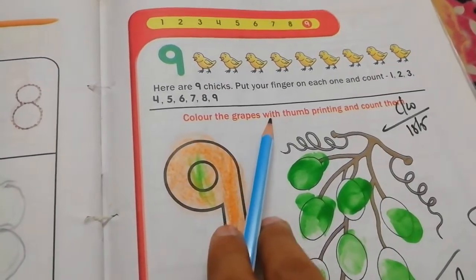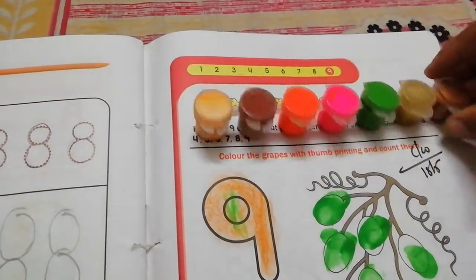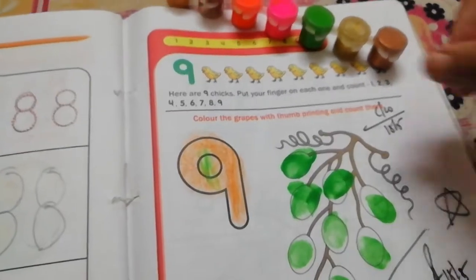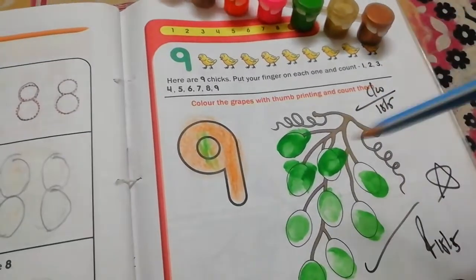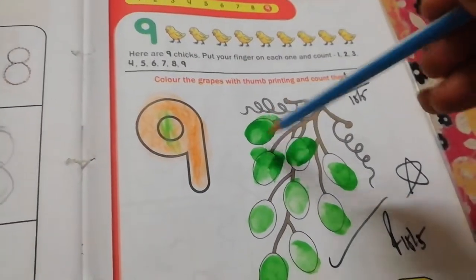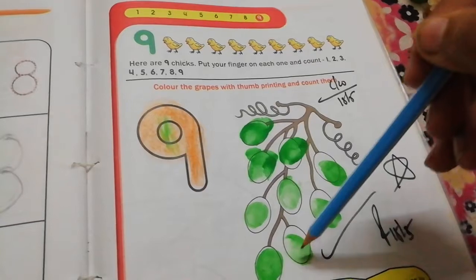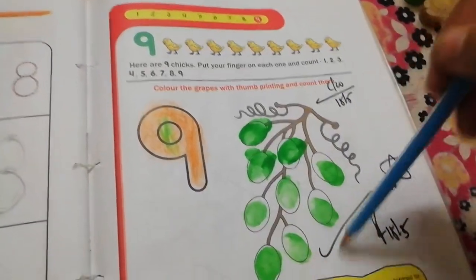Color the grapes with thumb printing and count them. Dear student, you will take this watercolor and put the thumb on each grapes and count them. Now count with me. 1, 2, 3, 4, 5, 6, 7, 8, 9. There are 9 grapes.